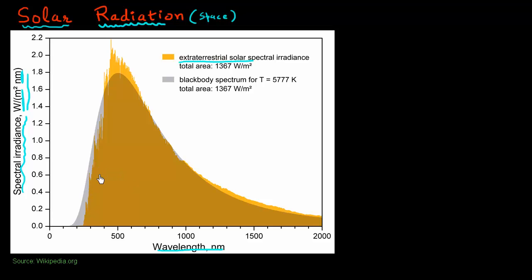The incoming solar radiation, or solar irradiance, plotted as a function of wavelength, resembles very closely to the gray curve, which is indicated as the black body spectrum. This radiation from the sun resembles very closely what you would expect from a black body at the same temperature as the sun, which is approximately 5800 Kelvin.